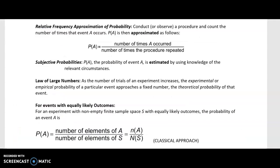Here are a few more vocabulary words. Relative frequency approximation of probability: when you conduct an experiment and count the number of times an event occurs, the probability is approximated as the number of times event A occurred over the total number of times the procedure was repeated. For example, if you plant 100 sunflower seeds and 83 of them grow, your relative frequency approximation for germination would be 83 over 100.